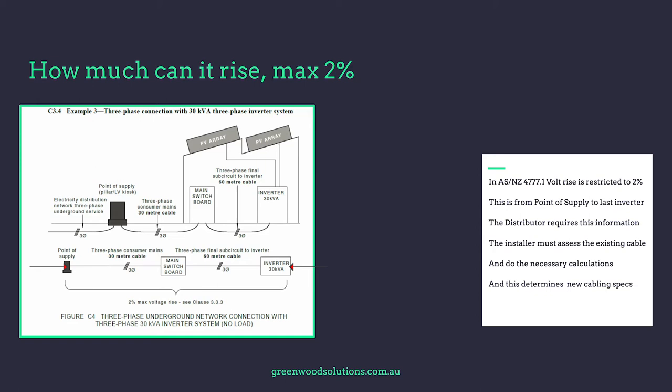This is from the point of supply to the last inverter. The distributor requires this information, and the installer must assess the existing cable and do the necessary calculations — this will determine any new cabling that's installed.